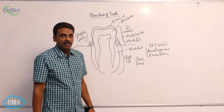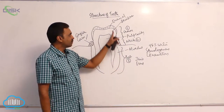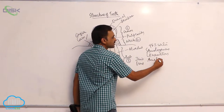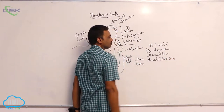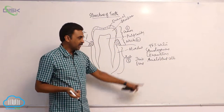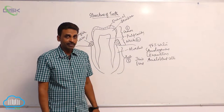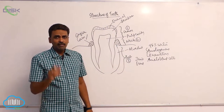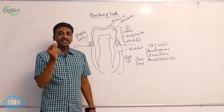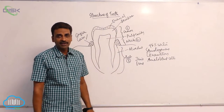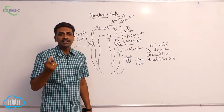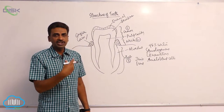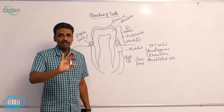Enamel is ectodermal in origin, produced from cells called ameloblast cells, which embryonically originate from ectoderm. Enamel is light yellow to grayish white in color and is actually transparent, with a maximum thickness of 2.5 mm at the region of the cusps. Indiscriminate brushing will remove the enamel, and in the case of enamel, there is no collagen.